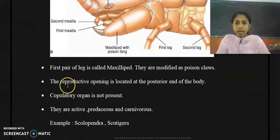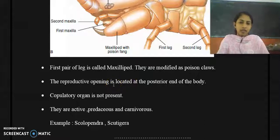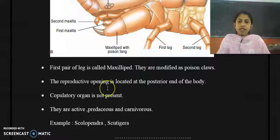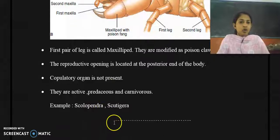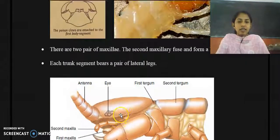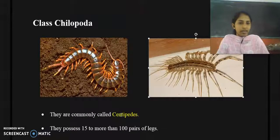The reproductive opening is located at the posterior end of the body, and copulatory organs are absent. They are active, predaceous, and carnivorous animals. Examples are Scolopendra and Scutigera. These are the salient features and a brief description of Class Chilopoda. Thank you.